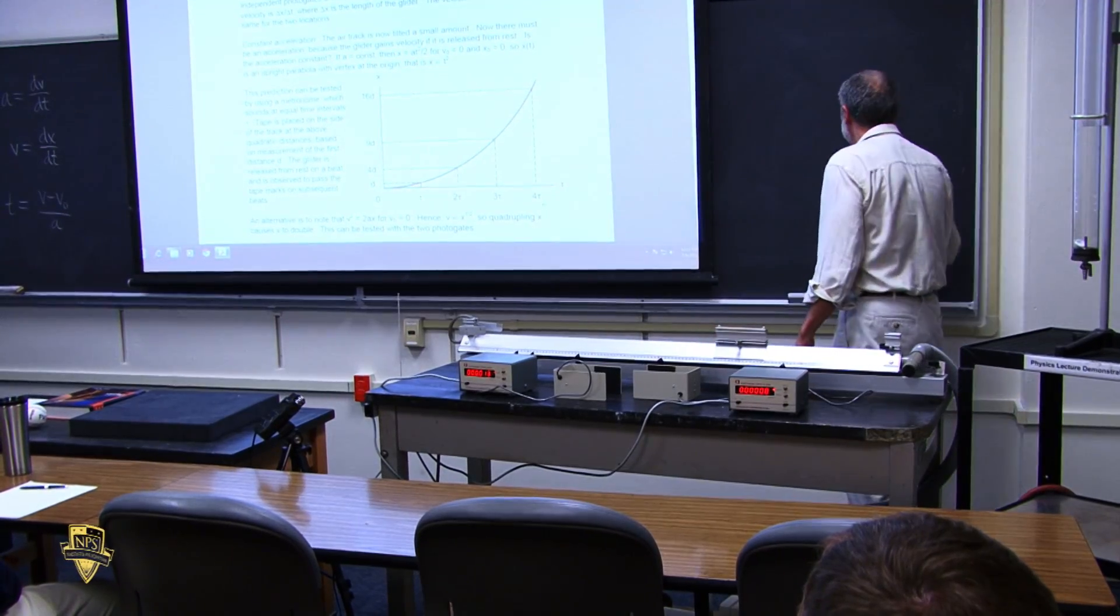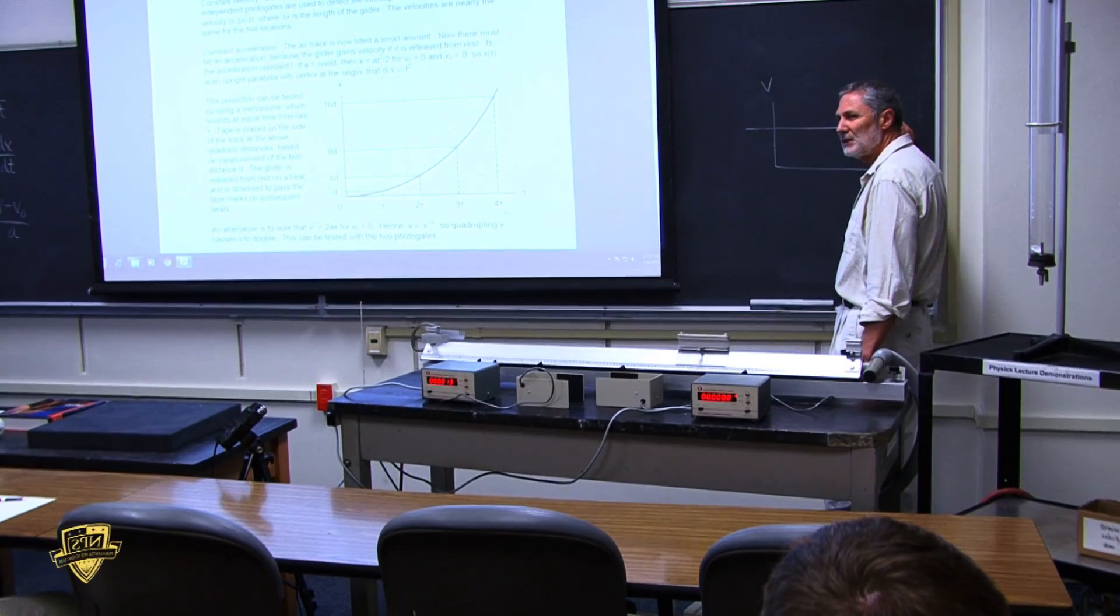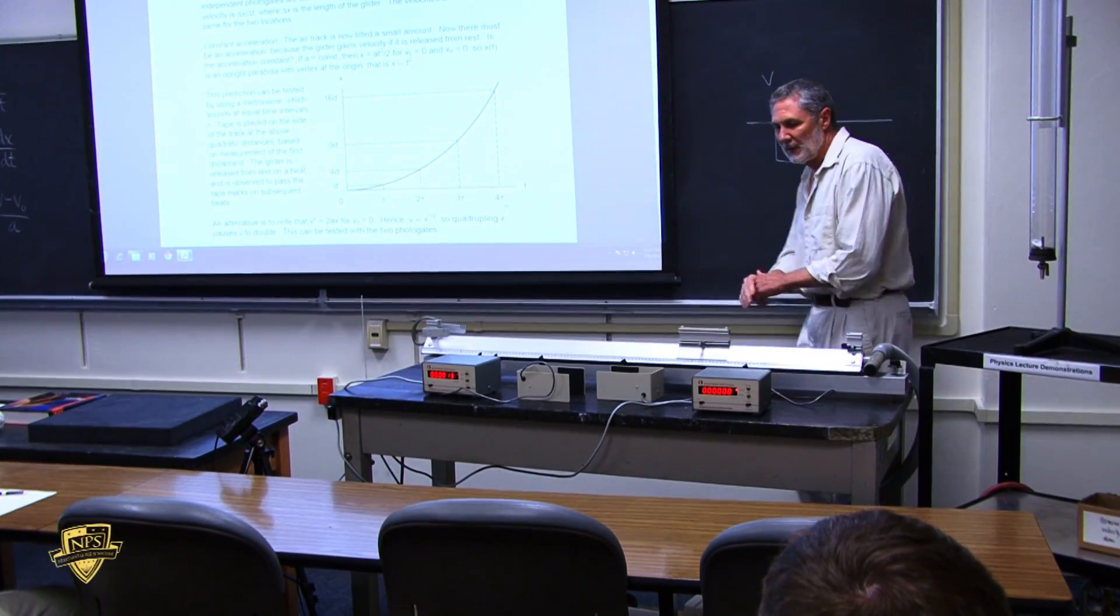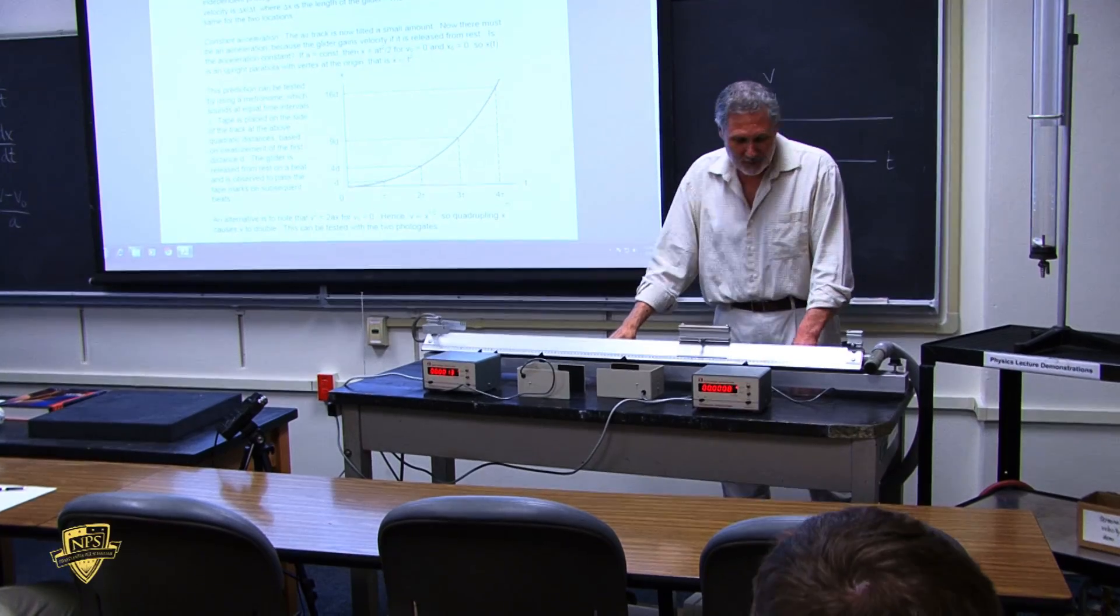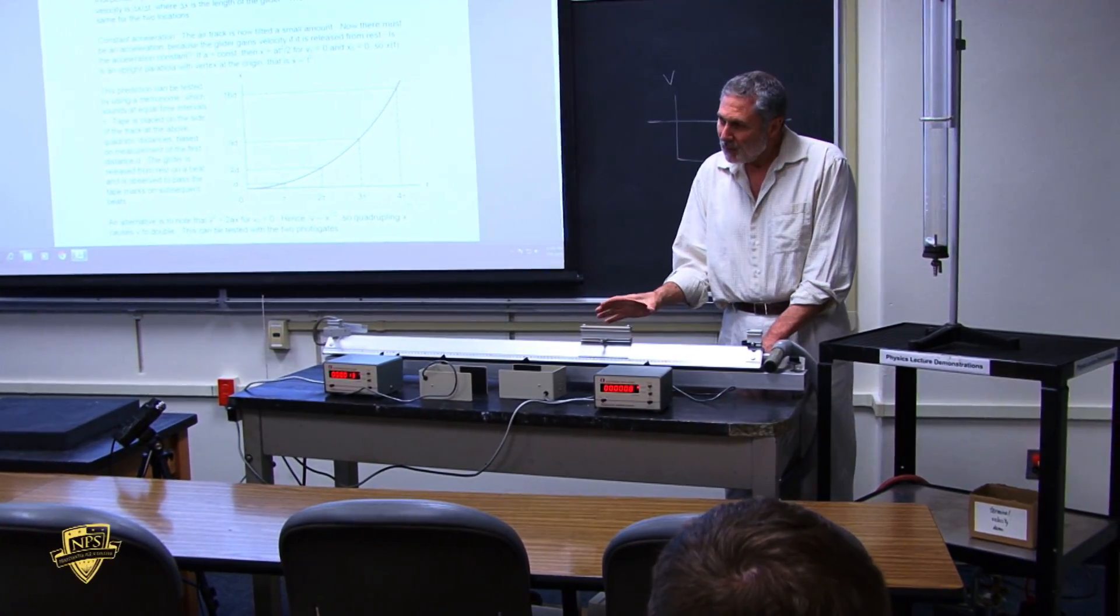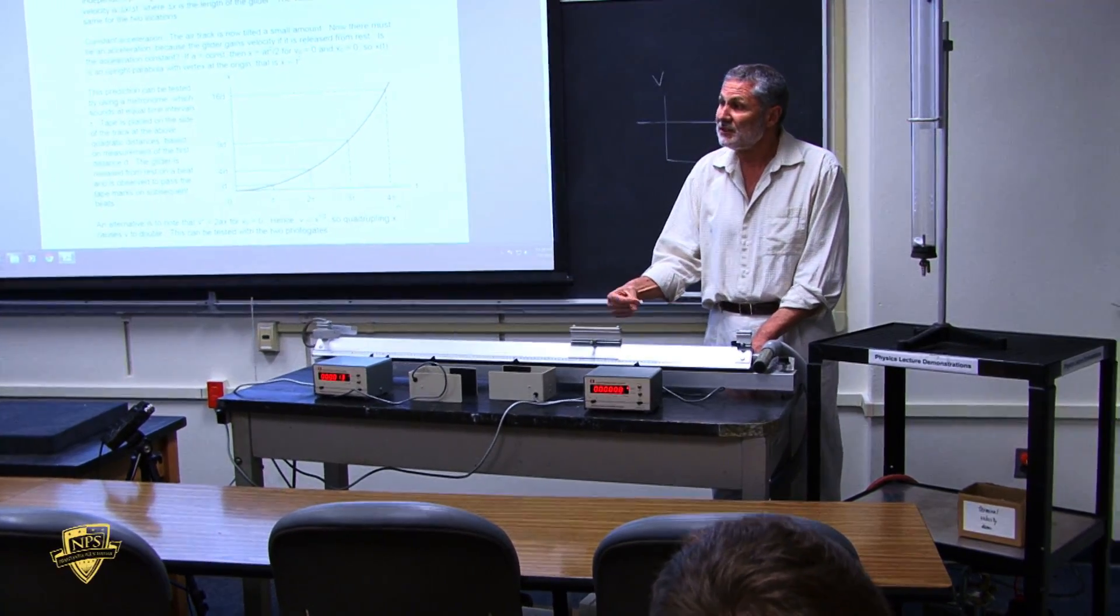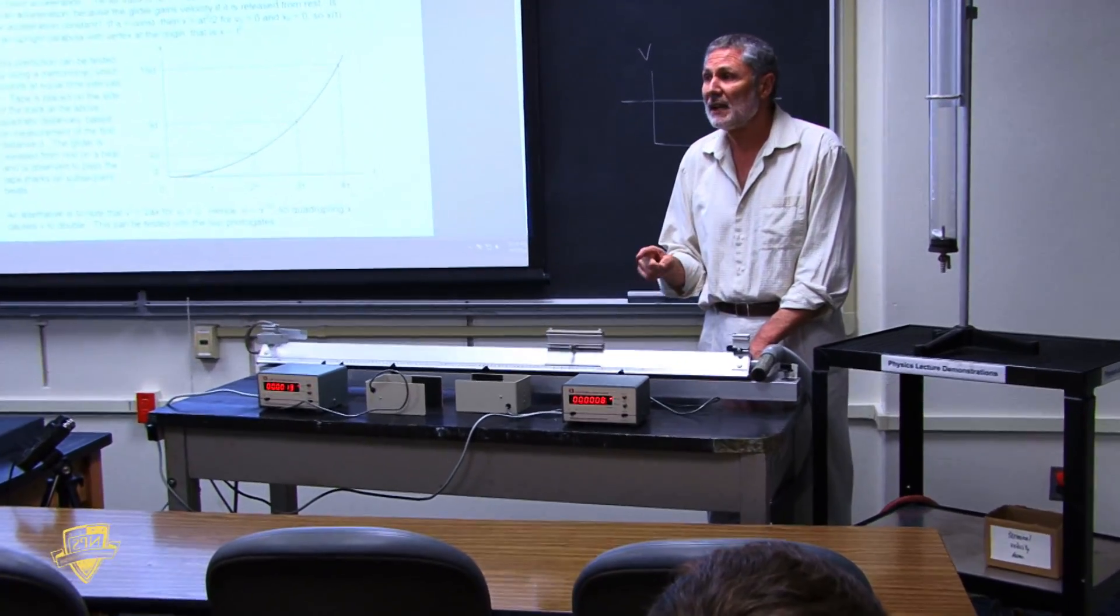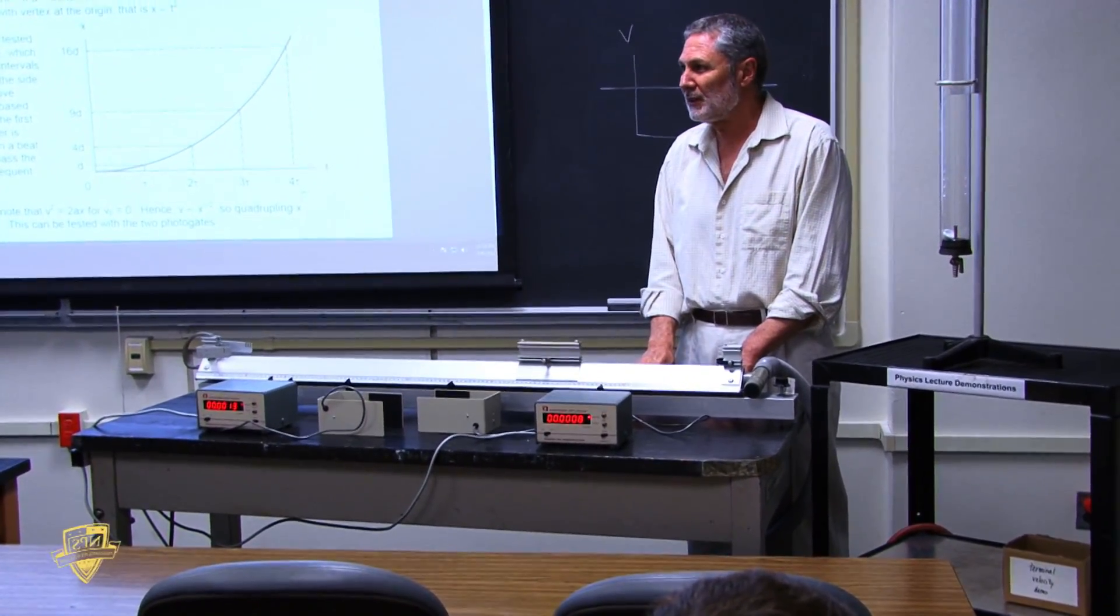To beat it to death, here's another way. It's constant velocity, except when it bounces back. What's going to happen when it bounces back? It comes in with a certain speed. Speed is the absolute value of velocity. What's the speed you think it's going to go out at?